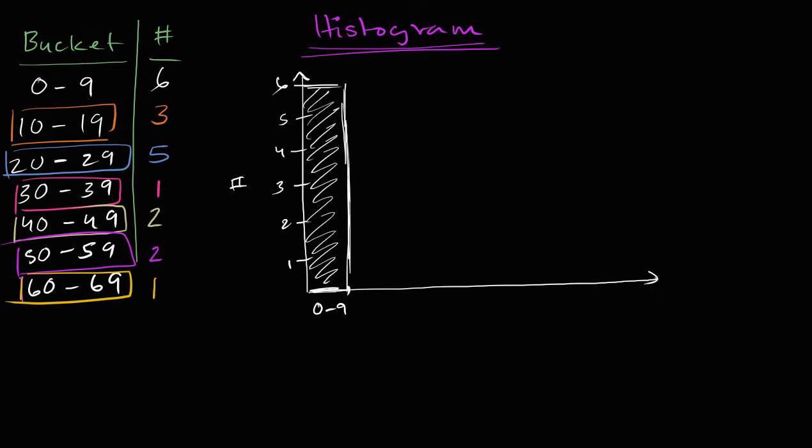And then we have the 10 to 19. There are three people. So 10 to 19, there are three people. So I'll do a bar like this. Then 20 to 29, I have five people. 20 to 29, which is going to be this one. So 20 to 29. This is going to be this bar. There's five people. Five people there. So it'll look like this.